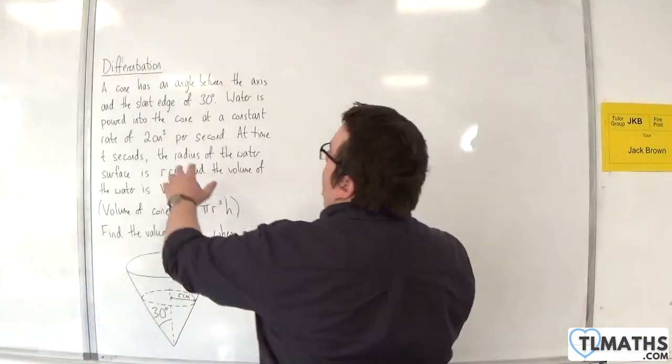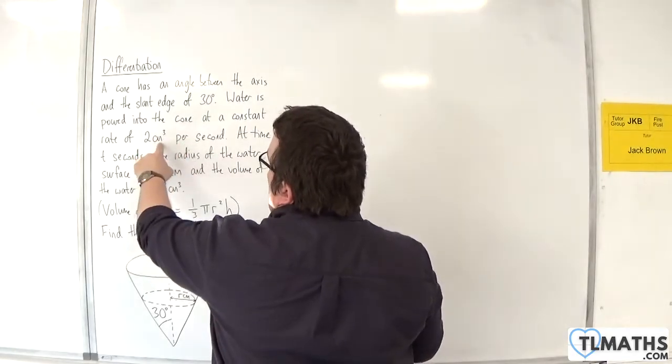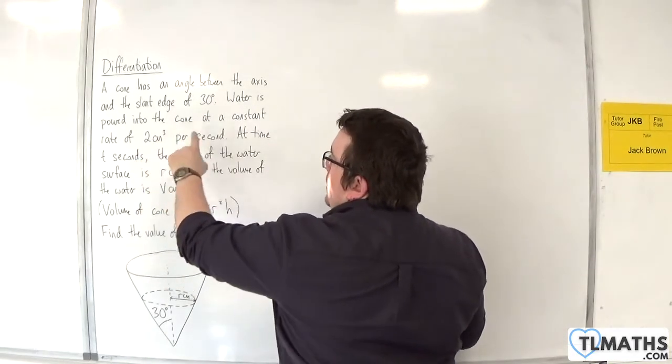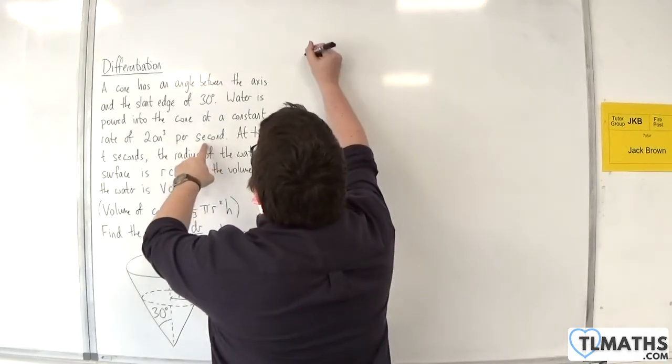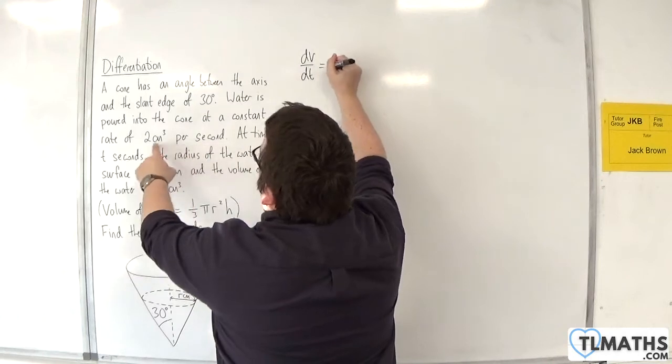Water is poured into the cone at a constant rate of 2 cubic centimeters per second. That is the first bit of information we're given. We have centimeters cubed, which is a volume, per second, so time, so dv by dt is equal to 2.